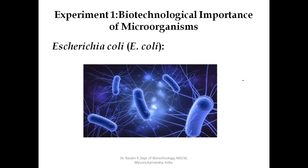E. coli can double every 20 minutes. At that rate, it would be possible to produce millions of E. coli cells from one parent cell within about 6.5 to 7 hours. Fast growth means an experiment can be reproduced quickly for consistent results. That is why E. coli is the first choice for molecular cloning.